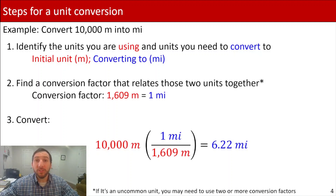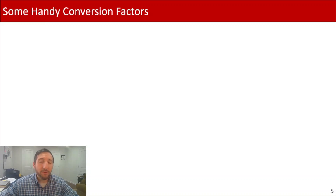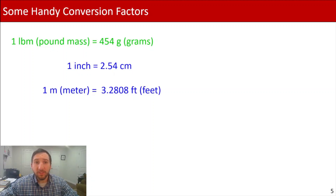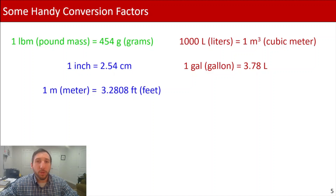Now that we've done our first unit conversion, I wanted to share some handy conversion factors. In addition to 1,609 meters equal to one mile, we've got: one pound mass equals 454 grams; one inch equals 2.54 centimeters; one meter equals 3.2808 feet. For volumes: 1,000 liters equals one cubic meter, and one gallon equals 3.78 liters. These are some basic conversion factors that are handy to write down or memorize, so you can do mental conversions.